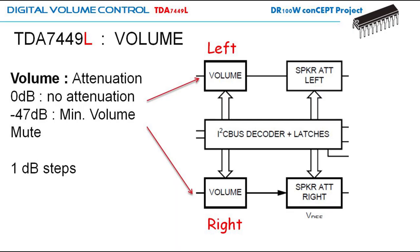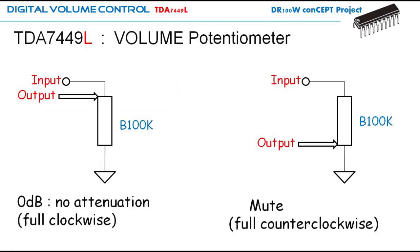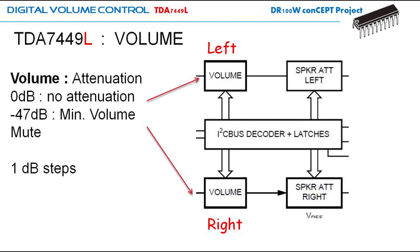Let's see the volume control, which is just one control for the left and right channel, from zero to minus 47 dB in a one dB step, followed by mute — meaning there are 48 steps from zero to mute. We can see an analogy to the popular volume control potentiometer: fully clockwise is zero dB, and fully counterclockwise is mute with no output from the amplifier.